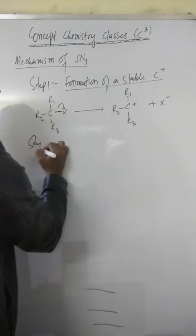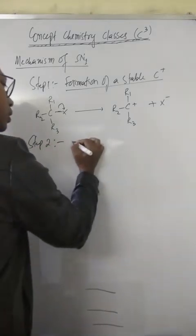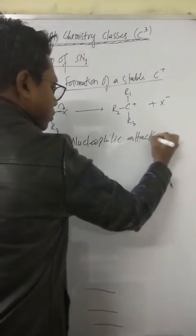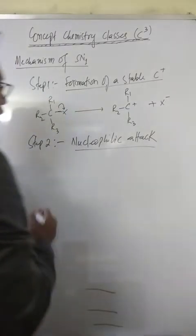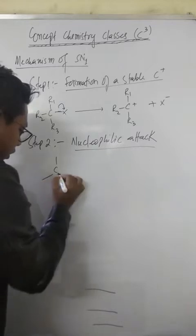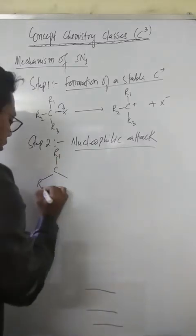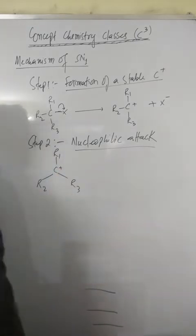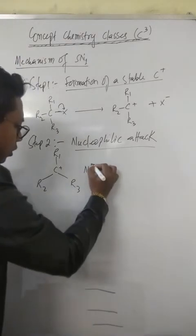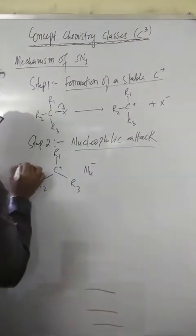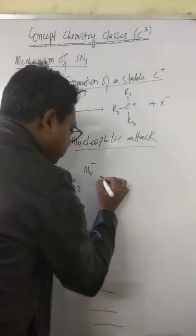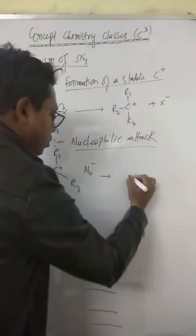In the second step, which is nucleophilic attack, since this carbocation is sp2 hybridized, its structure will be trigonal planar. So we have 50% chances for the nucleophile to attack from both sides. If it is attacked from the left side, this will form a product.